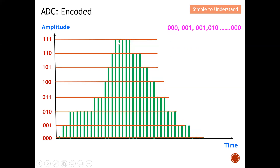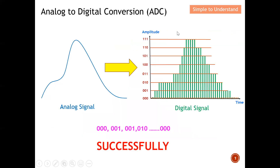Now I'm ready to convert the signal into digital format. The first value is 000, indicating the lowest point. Next is 001, then 001 again, then 010, and so on, until finally returning to 000. From this, I have successfully converted the analog signal into a string of 1s and 0s — a digital signal — representing the original analog waveform.